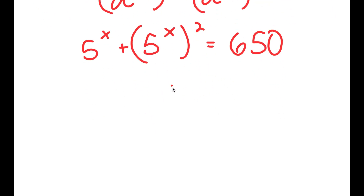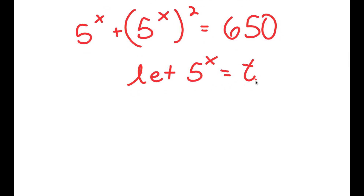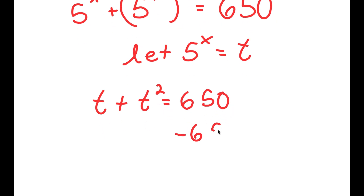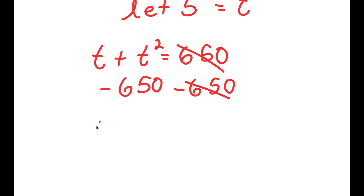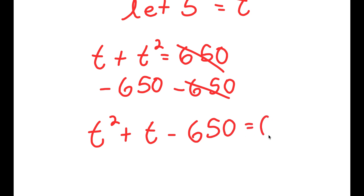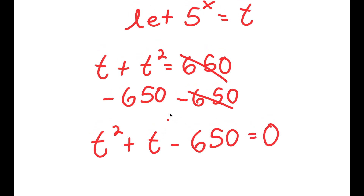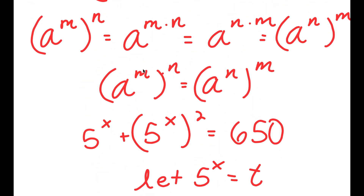Now the reason I did all of this is because I'm going to let 5 to the power of x equal the variable t. If I substitute t for 5 to the power of x, I get t plus t squared is equal to 650. Now I can subtract 650 on both sides, so I get t squared plus t minus 650 is equal to 0. This is a quadratic equation, which is much easier to solve than an exponential equation.